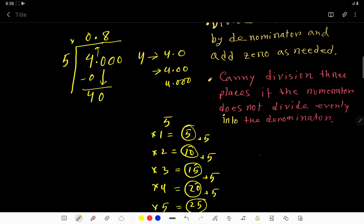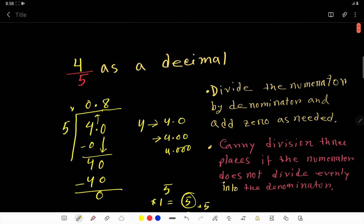8 times 5 is 40, so you don't need much zeros here because this is enough according to our need. So 4 by 5 as a decimal is 0 decimal point 8. This is the answer. Thank you for watching this video.